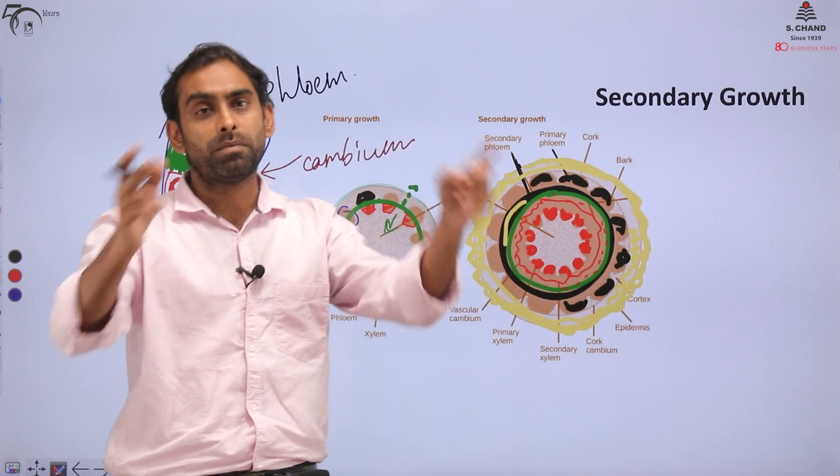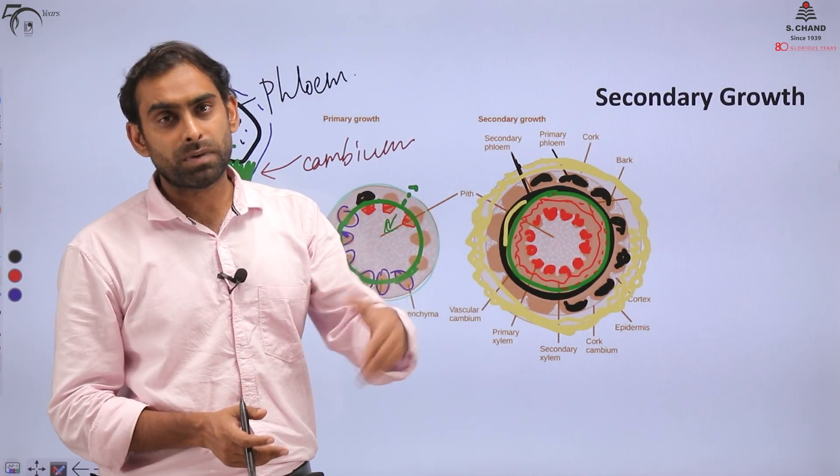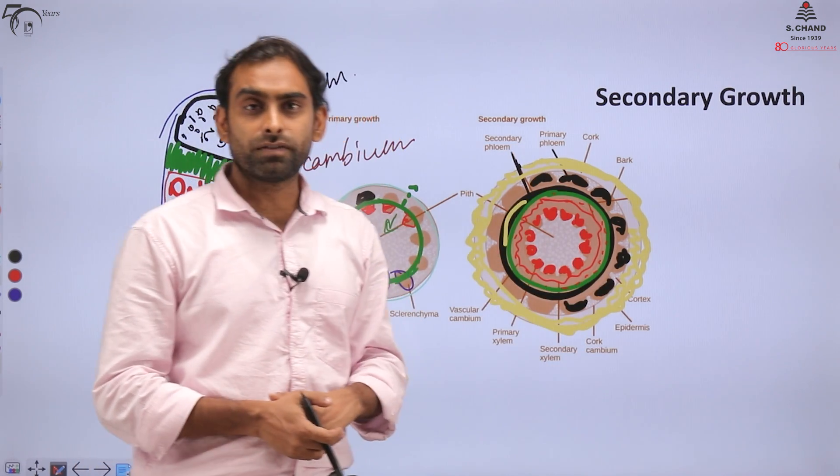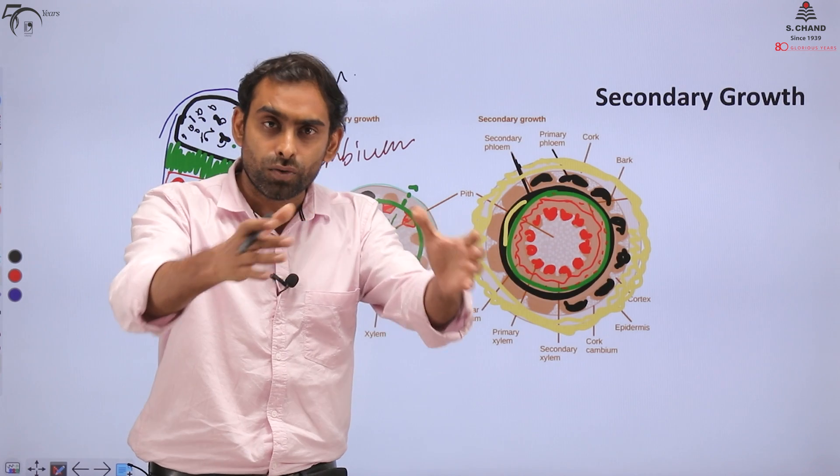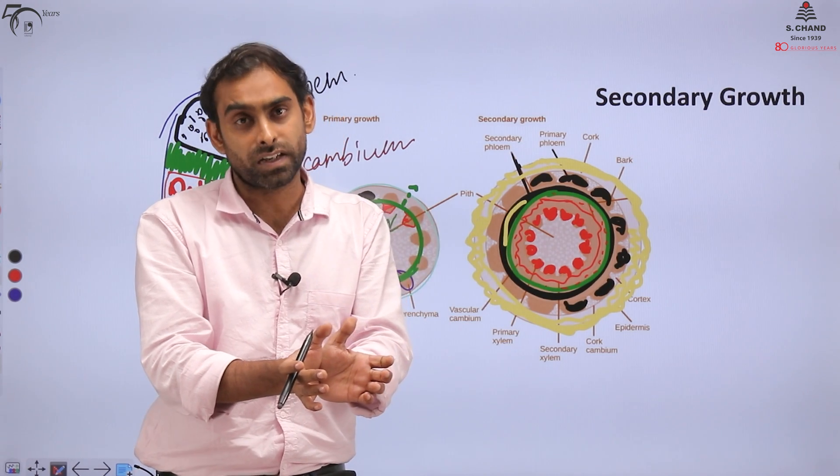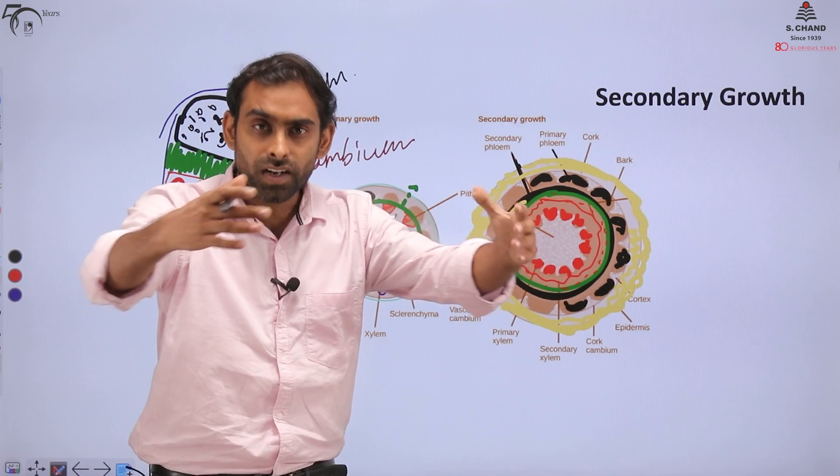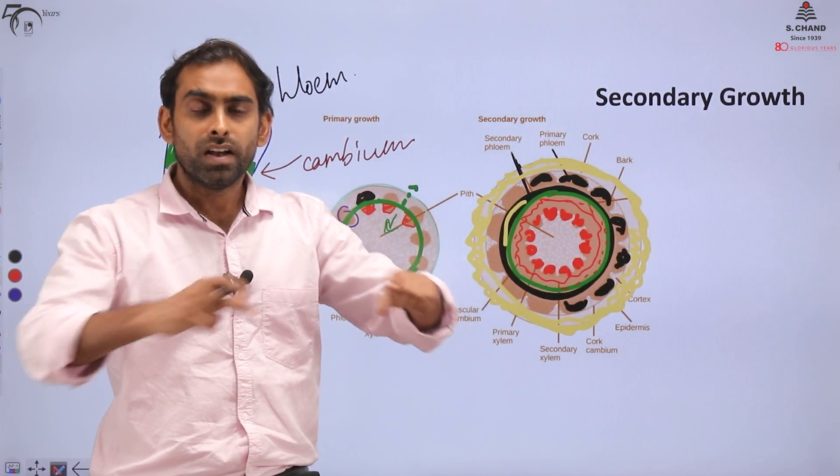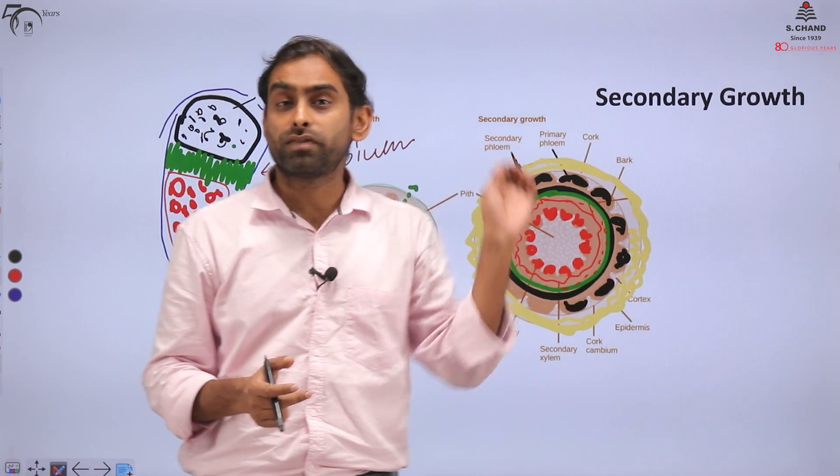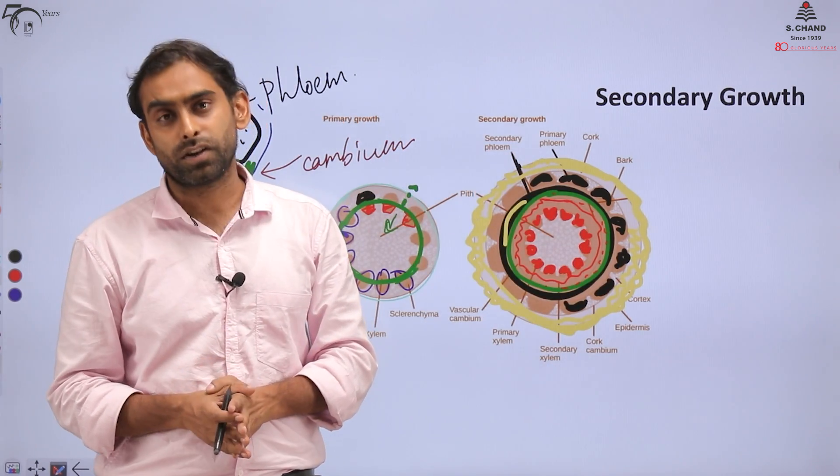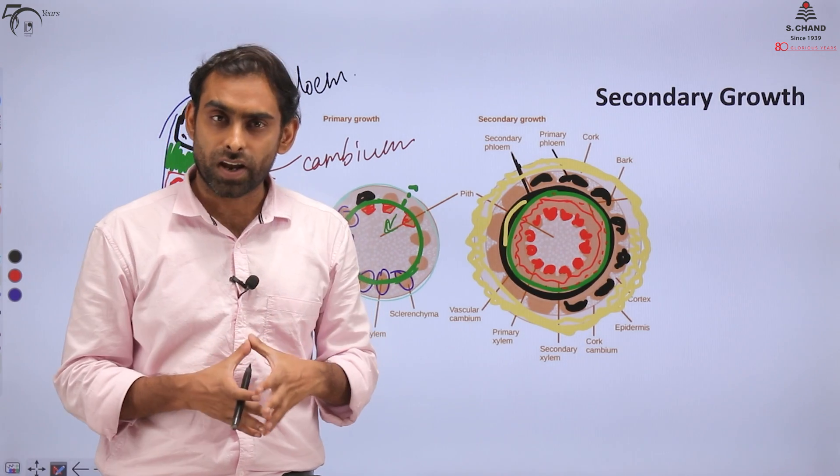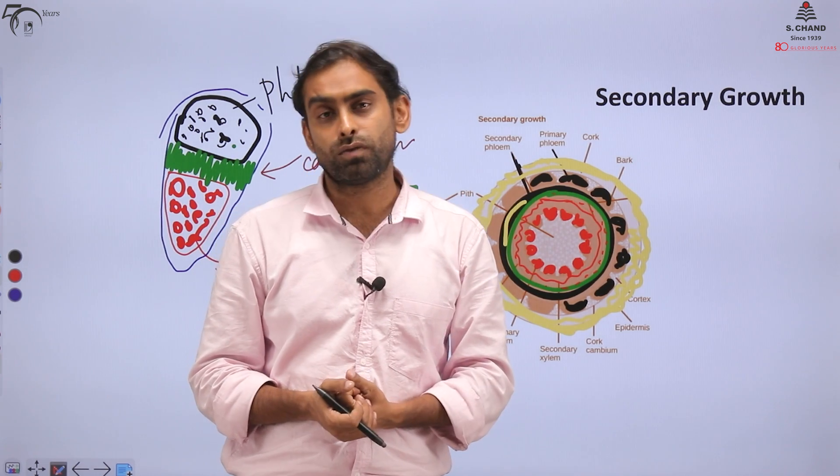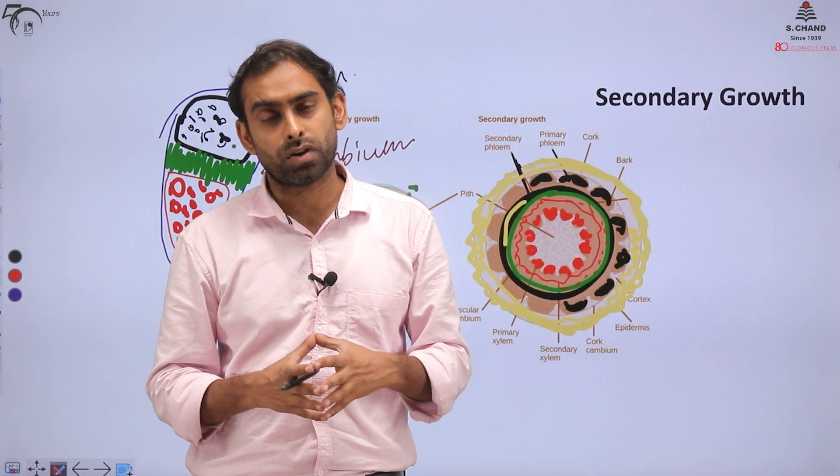Now what will happen if this happens year after year? If this growth happens repetitively, then year after year, every year a new ring of secondary xylem and secondary phloem will appear. This is how plant will keep on increasing in its diameter. And every year you will have a ring in the plant that will be representative of this secondary growth. So how do those rings look like, and can we make out some information out of those rings? We will see just after a short break.